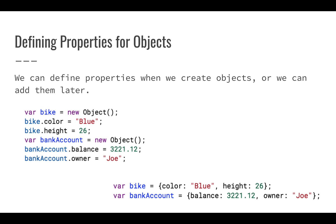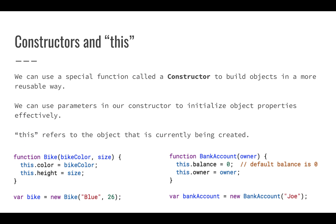We can also build objects using curly brace notation — var bike equals, and then we build the object: its color is blue and its height is 26. Both approaches are pretty common. If we want to reuse code, we might want to use a constructor, which allows us to build many objects that have common behaviors and the same kinds of properties. We can use this constructor function to build objects over and over again.